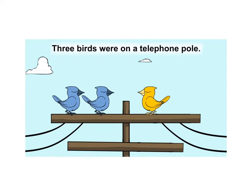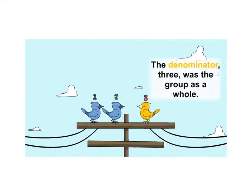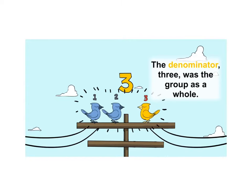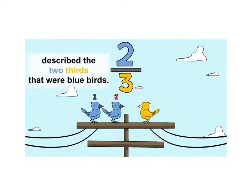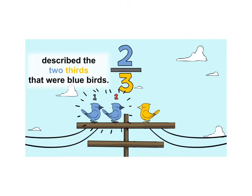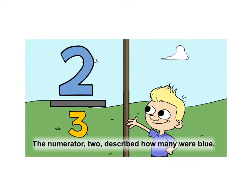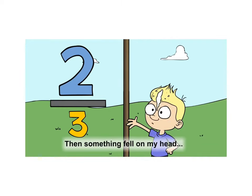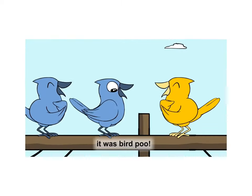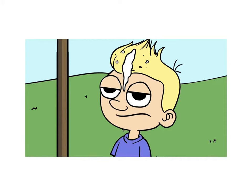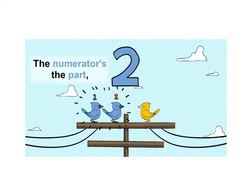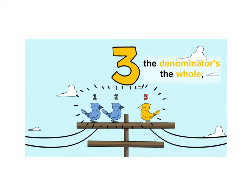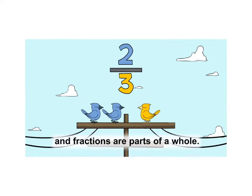Three birds were on a telephone pole. The denominator three was the group as a whole. The numerator two, out of the thirds, described the two-thirds that were bluebirds. The numerator two described how many were blue. Then something fell on my head — it was bird poo. The numerator's the part, the denominator's the whole. The fractions are parts available.